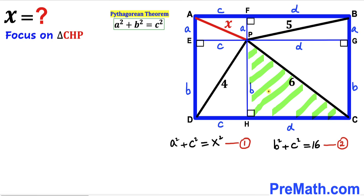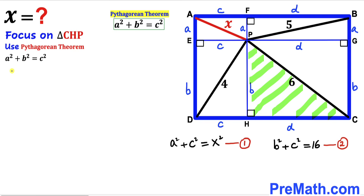Next, let's focus on right triangle CHP and apply the Pythagorean theorem. Here the hypotenuse is 6 and the two legs are lowercase b and lowercase d. Filling in the formula gives b² + d² = 6², which simplifies to b² + d² = 36. I will label this as Equation 3.